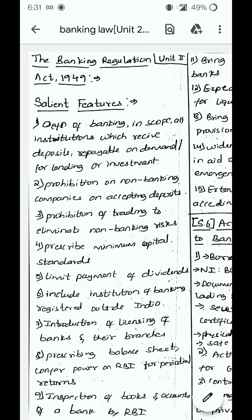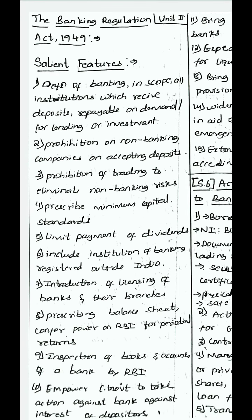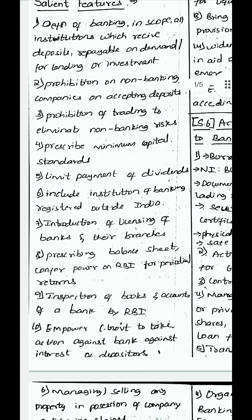First, the Banking Regulation Act 1949. Its salient features have been asked for 10 marks. The act defines banking and brings all banking institutions within its scope, defining banking as receiving deposits repayable on demand or for lending or investment. Institutions that take deposits from customers and return them on demand, and also give loans for investment. Another feature is prohibition of non-banking companies on accepting deposits — it prohibits or limits their deposits.